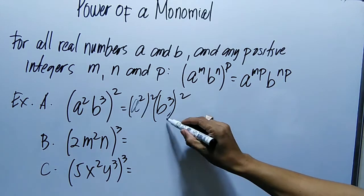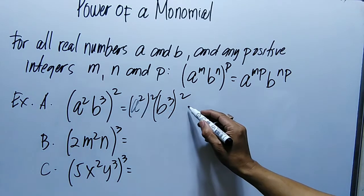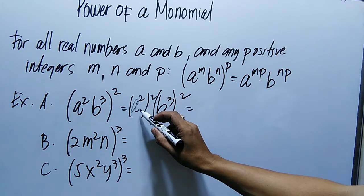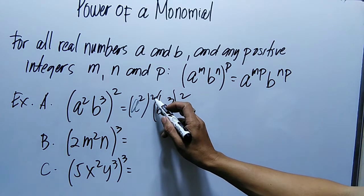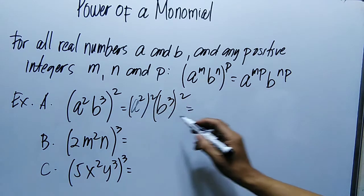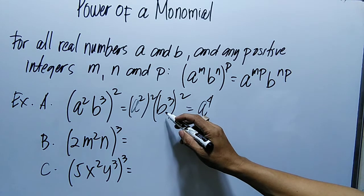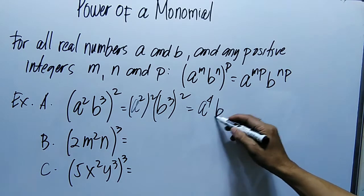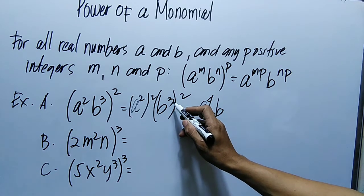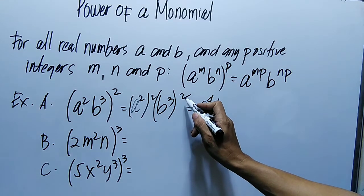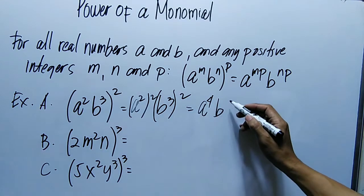Then equals, si A raised to the power of 2, multiply by the exponent na 2. So magiging A to the 4th power. Then si B, meron exponent na 3, multiply din natin sa power na 2. So magiging B to the 6th power.